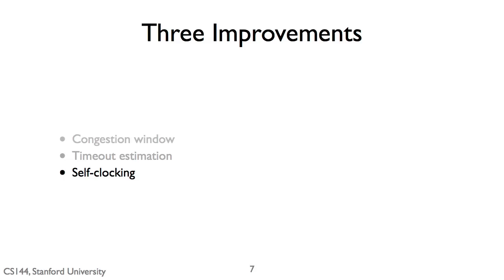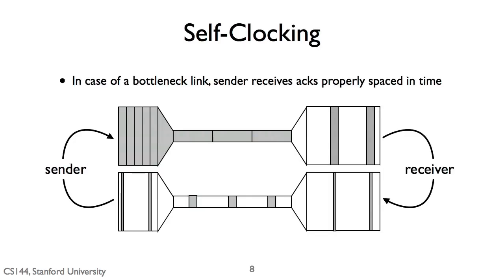The third improvement TCP Tahoe brought was self-clocking, which is in some ways the greatest conceptual contribution of TCP Tahoe. The idea is to clock out the packets you send based on the acknowledgments you receive. Van Jacobson's conceptual model: suppose the sender has a big fat pipe and the receiver also has a fat pipe, but there is a bottleneck link in the middle. Packets sent very fast from the sender get stretched out in time across that bottleneck and arrive spaced out at the receiver. If the receiver generates acknowledgments directly in response to these packets, it sends ACKs with the same timing it received them — timing determined by the bottleneck link.